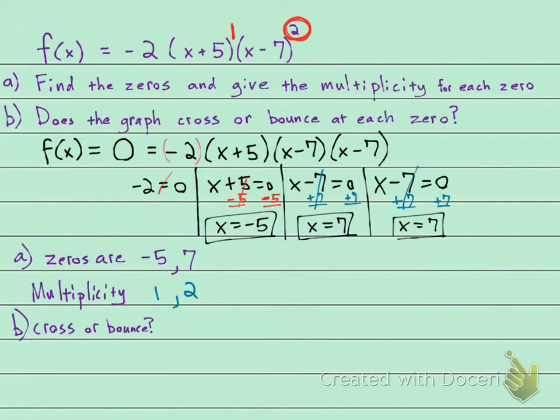If your multiplicity is odd, like 1, 3, 5, 7, 9, if your multiplicity is odd, then it is going to cross. So this one crosses.